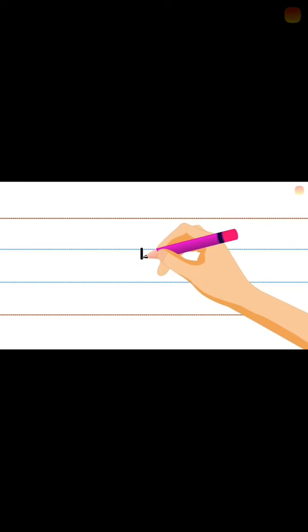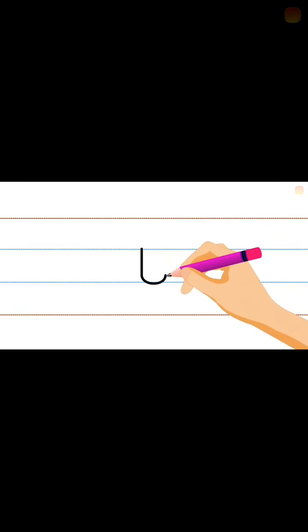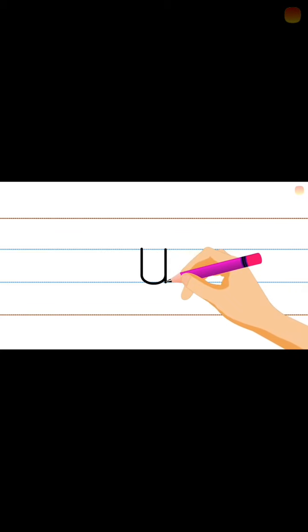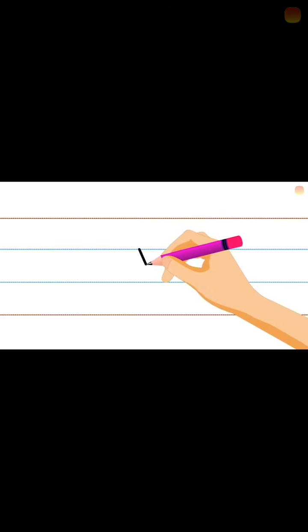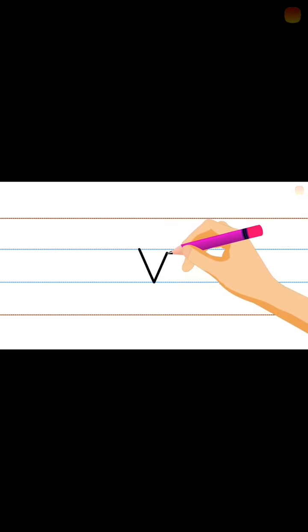U. What is this? U. How to write? Start from the middle line, standing line, small curve. Again from the middle to small curve at the bottom. Next, v. Slanting line to the right turn, then the slanting line.